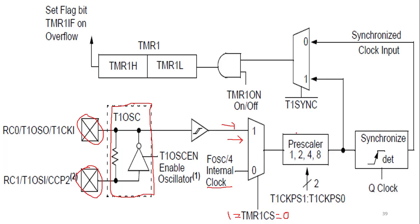The next block is a prescaler, which is used for dividing the clock signal by specific values. The available prescaler values are 1, 2, 4, and 8. We can select these values using the two bits T1CKPS1 and T1CKPS0, allowing us to divide the incoming clock by 1, 2, 4, or 8.